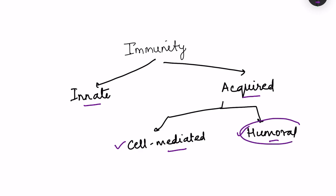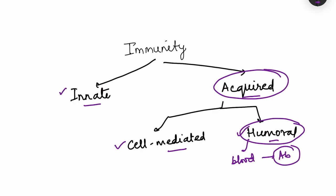Humoral immunity is due to mediators secreted in the blood, specifically antibodies, and here we are talking about acquired humoral immunity. Acquired means this immunity gets active only after exposure to the antigen. The basic apparatus is present in the body, but activation occurs only after antigen exposure, and this immunity is specific to that antigen — it will be active only against that antigen and not any other.